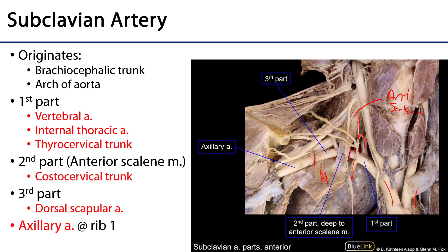Then there is the ascending cervical artery, which supplies some of the deep neck muscles, in particular the scalene group, with blood. We also have the transverse cervical artery, which supplies the trapezius muscle with blood. Sometimes that transverse cervical artery can host the dorsal scapular artery, which we'll get to when we discuss the third part of the subclavian artery. And finally, we have the suprascapular artery, which supplies some of the rotator cuff muscles, in particular the supraspinatus and infraspinatus, with blood.